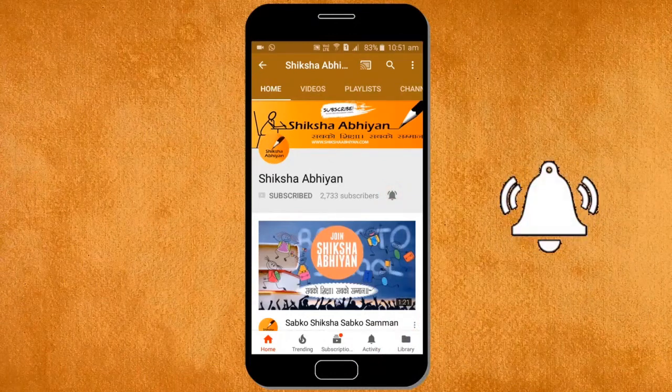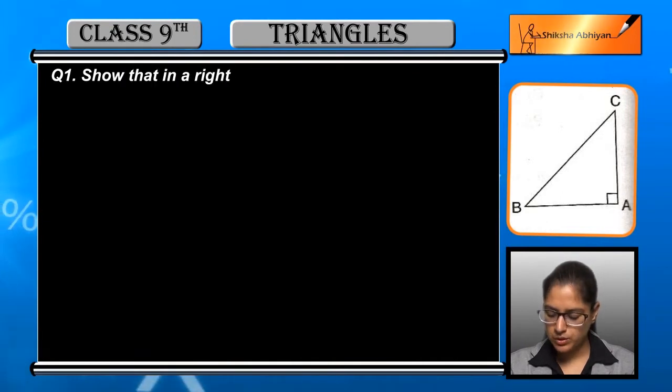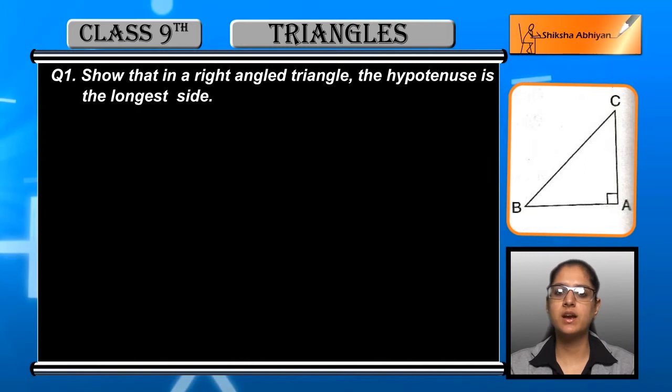Exercise 7.4, question number one: Show that in a right angle triangle the hypotenuse is the longest side.